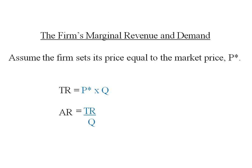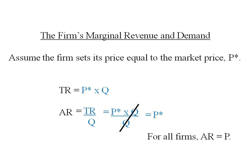Average revenue will be total revenue divided by output. We can substitute in P star times Q over Q. Notice that those Q's cancel, and average revenue is equal to price. This is going to be true for every type of firm — average revenue will always equal price.